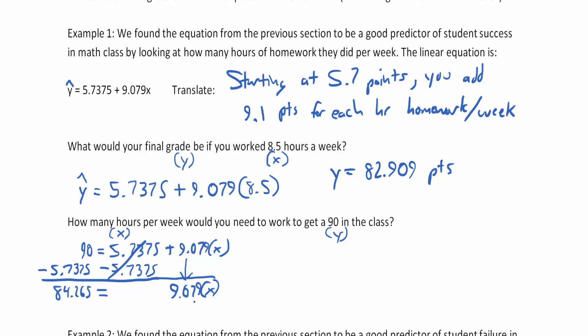Then we have 9.079x on the right side. Since 9.079 is multiplying x, we do the inverse operation, which is dividing. So divide both sides by 9.079. These simplify to make 1, and 84.265 divided by 9.079 gives approximately 9.28 hours per week. So if eight and a half hours gets you a B, nine and a quarter hours gets you the A minus.